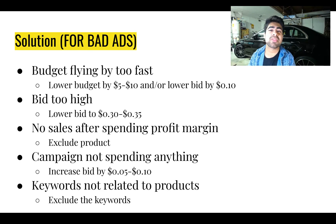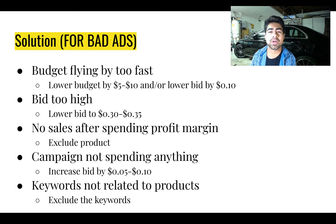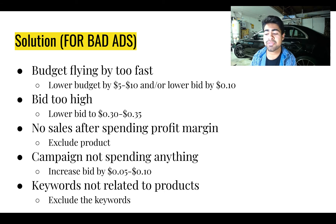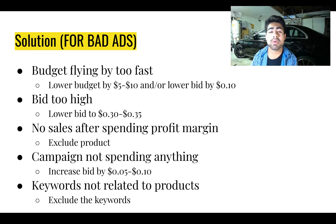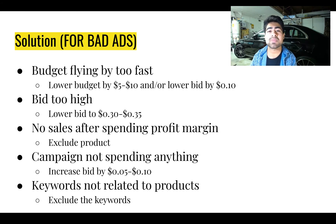As promised, let's speak about the solutions for your bad ads. If your Google campaign falls under the bad ad category, here's what to do. The first issue is that the budget is flying by too fast — the campaign is spending too much within half a day or overspending. In this case you have two options: lower your budget for the entire campaign by $5 to $10, or lower the bid by $0.10. In my own experience, implementing either lowering the budget or lowering the bid really helps get the campaign back on track — but again, you will have to wait three to five days before making conclusions.